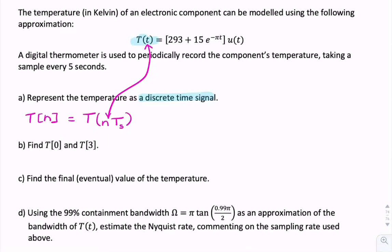And the function just happens to also be T for temperature. So we need to replace that. And we're given the sample period of 5 seconds. So uppercase Ts equals 5.